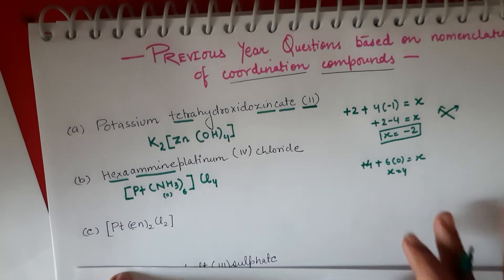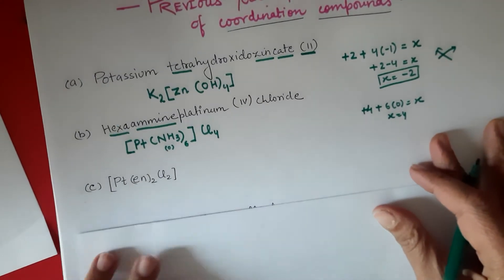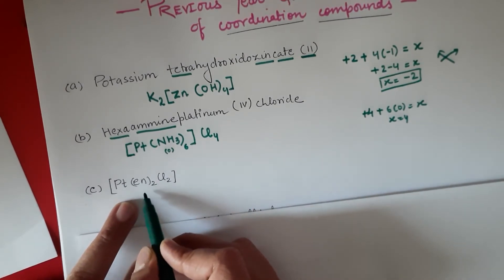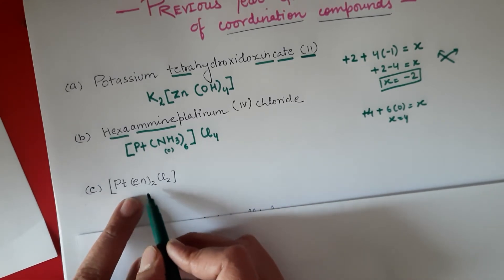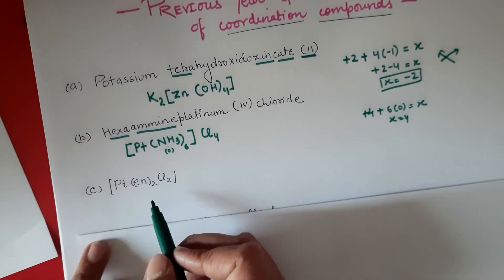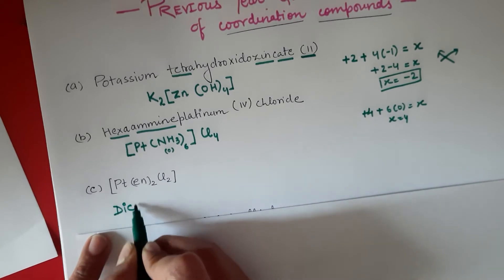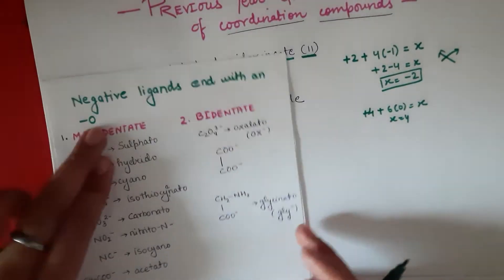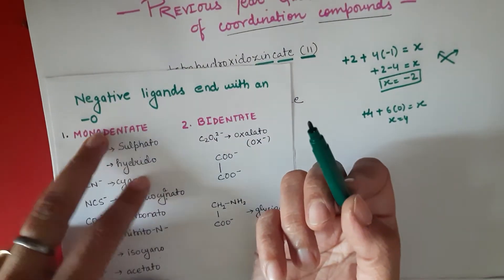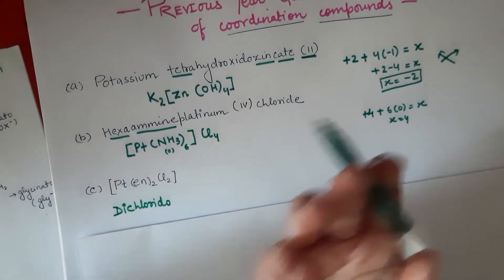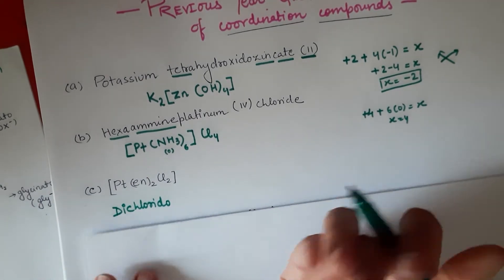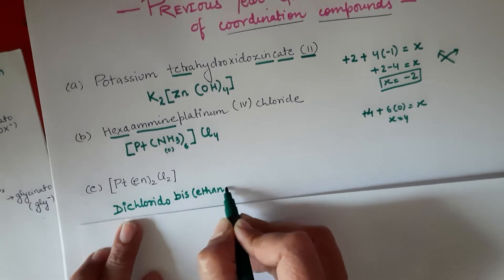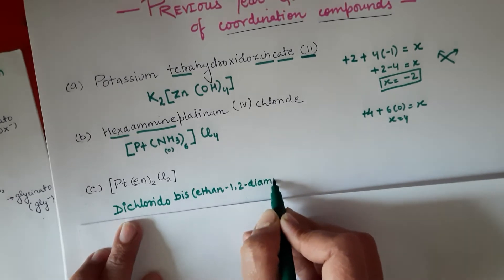Now we have to write the name of this formula. We have to name the ligands Cl and en in alphabetical order. 'en' is ethane-1,2-diamine and Cl is chlorido. 'C' comes first so we write: dichlorido — we add '-o' to negative ligands, so chloride becomes chlorido; iodide becomes iodido; bromido; fluorido — and so on. Then: bis(ethane-1,2-diamine).